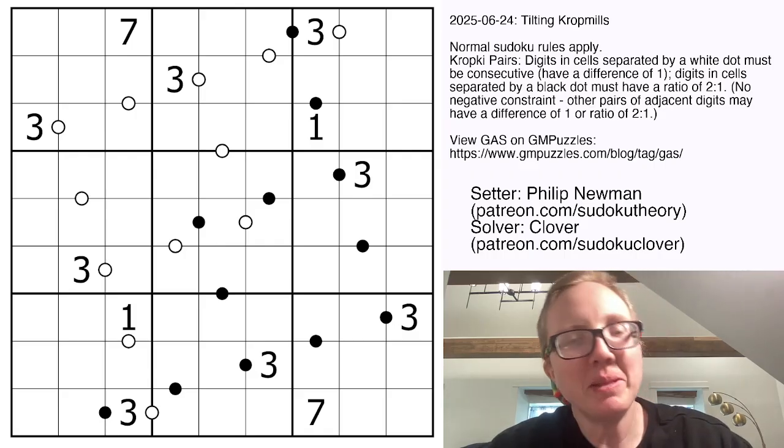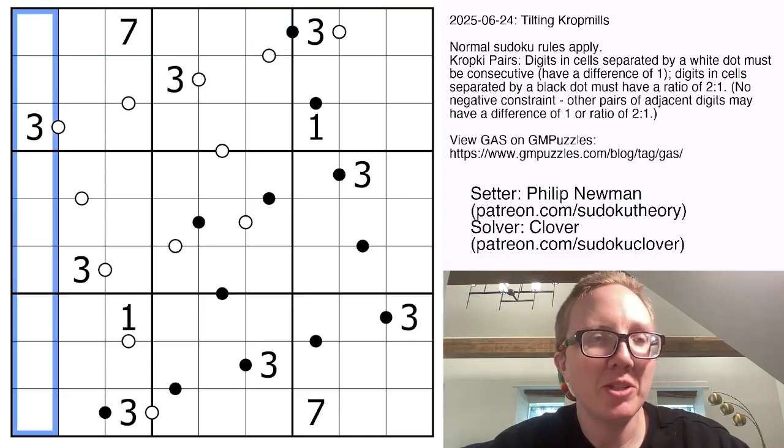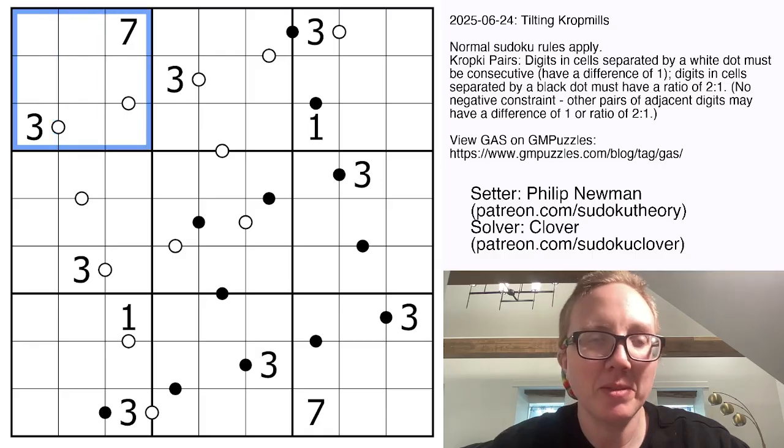This is a kropki pair Sudoku. We're placing the digits 1 through 9 once each in each row, each column, and each outlined 3x3 region.